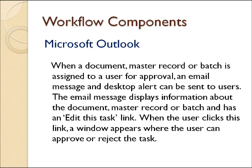The next component is Outlook, and you're all familiar with that. This is kind of a go-between those two systems. When a document, master record, or batch is assigned to a user for approval, an email message and desktop alert can be sent to those users. The email message displays information about the document and has an 'edit this task' link. When the user clicks on that link, a window appears where the user can approve or reject the task, or ask for a change. It's not just approvals that go into Outlook — it could be notifications. You may want a third party just to view what's going on. The whole workflow system is open, so you design what fits your company.